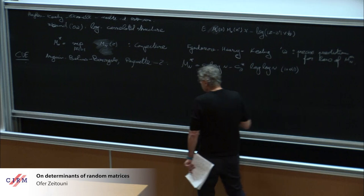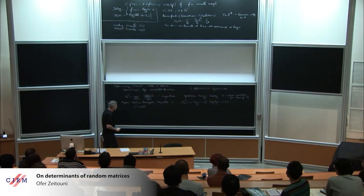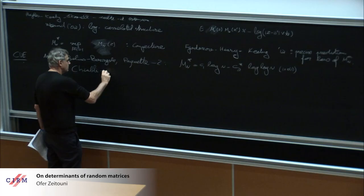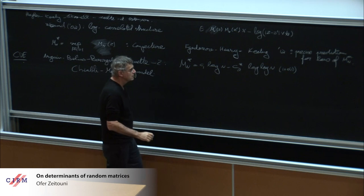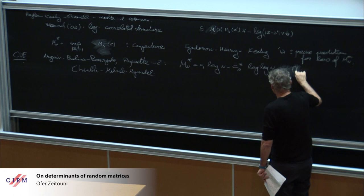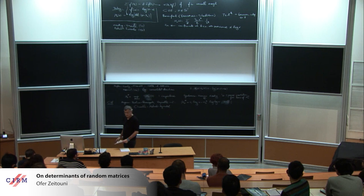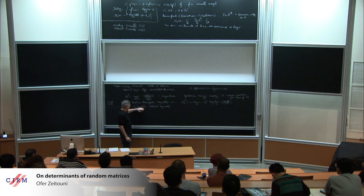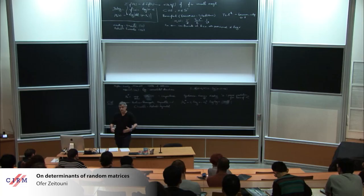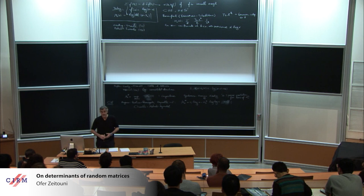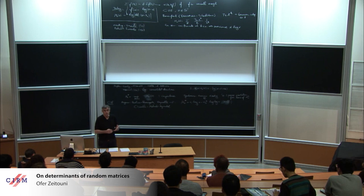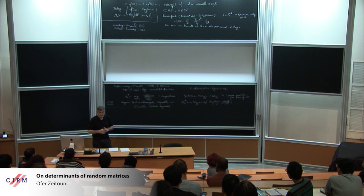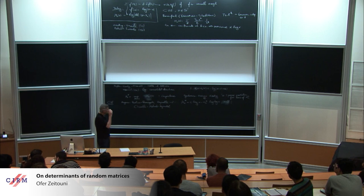There's work of Arguin, Belius, and Bourgade, and then of Paquette and myself. Which says that MN star is C1 log N minus C2 times log log N times 1 plus little o of 1. The real clincher is work of Chhaibi, Madaule, and Najnudel from a couple of years ago, who show that the difference is tight.